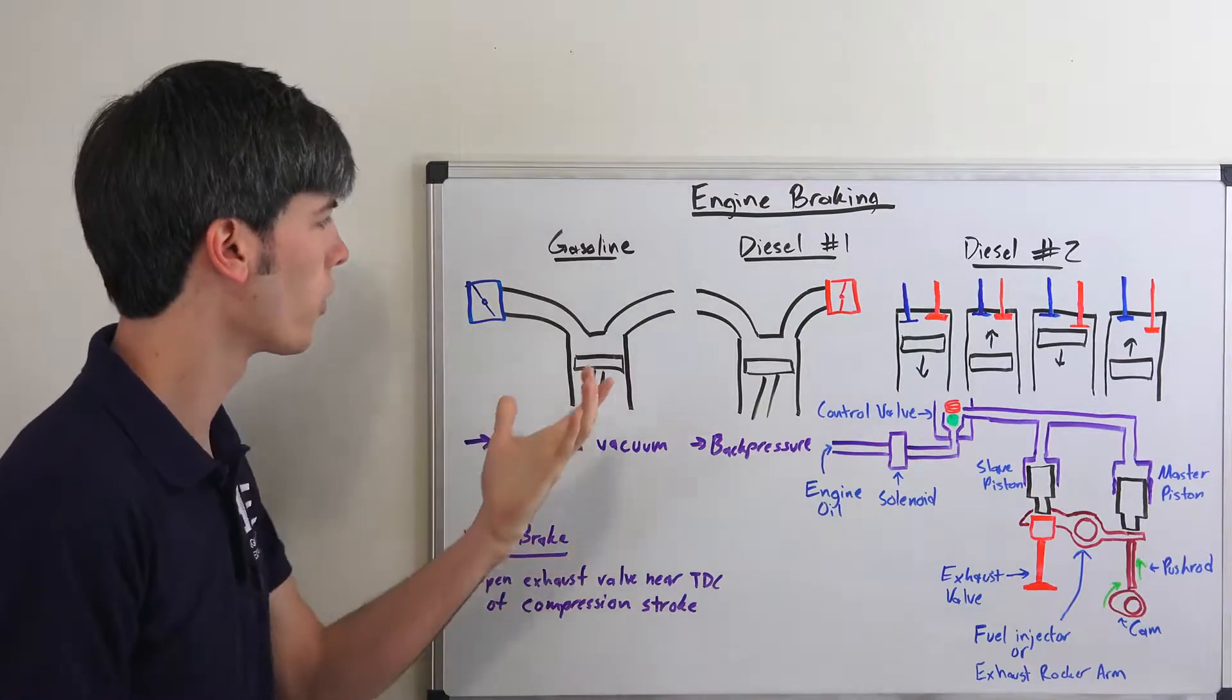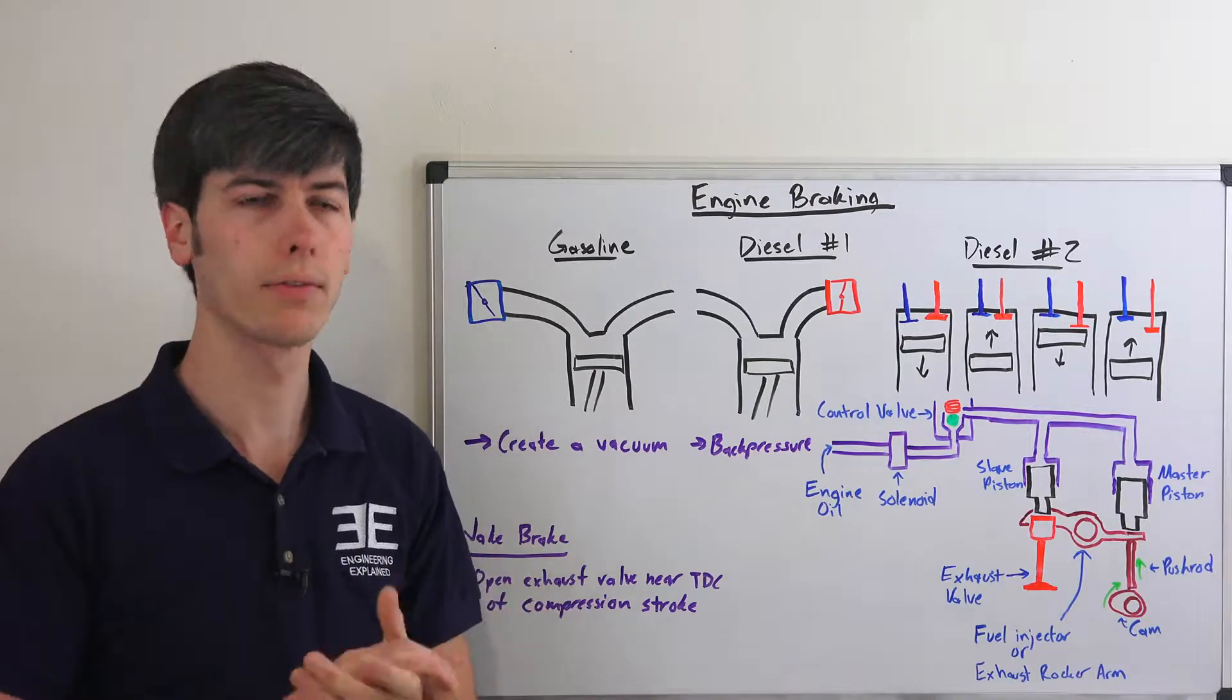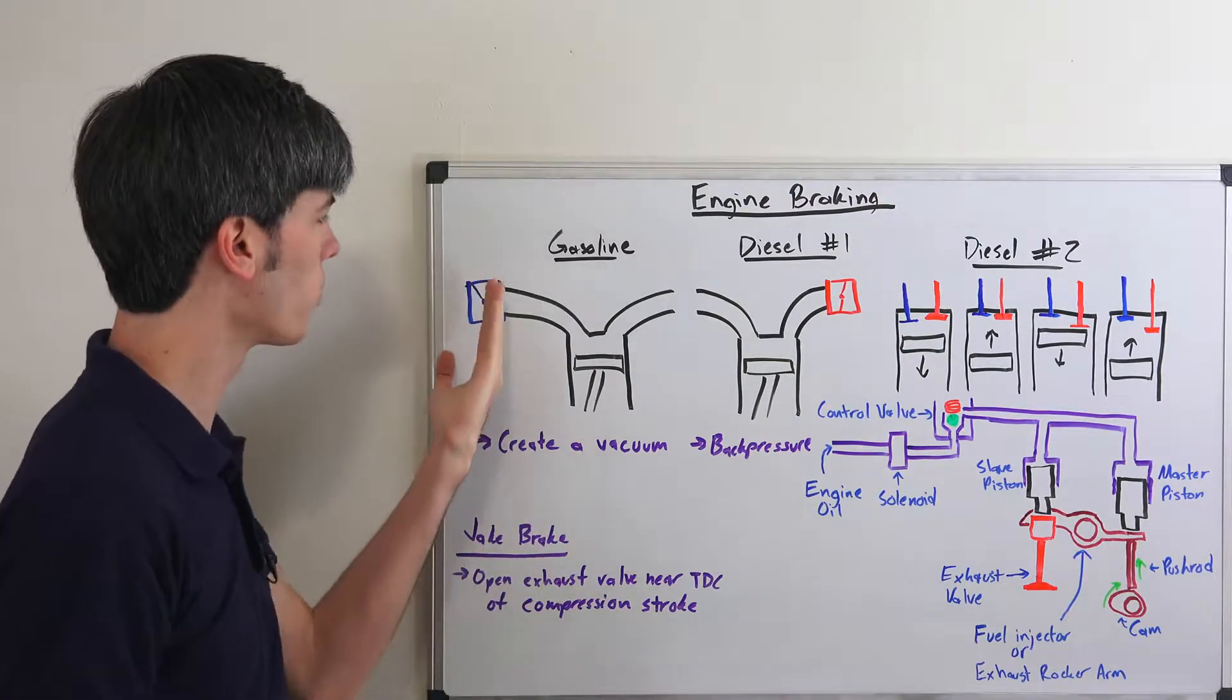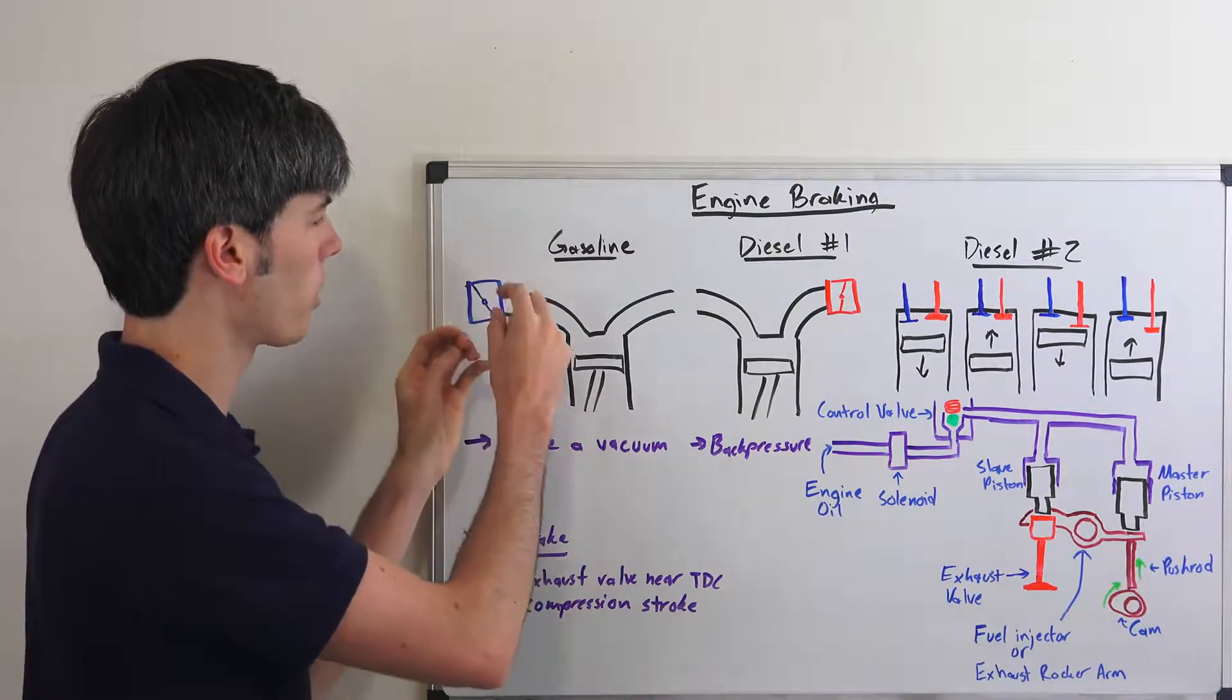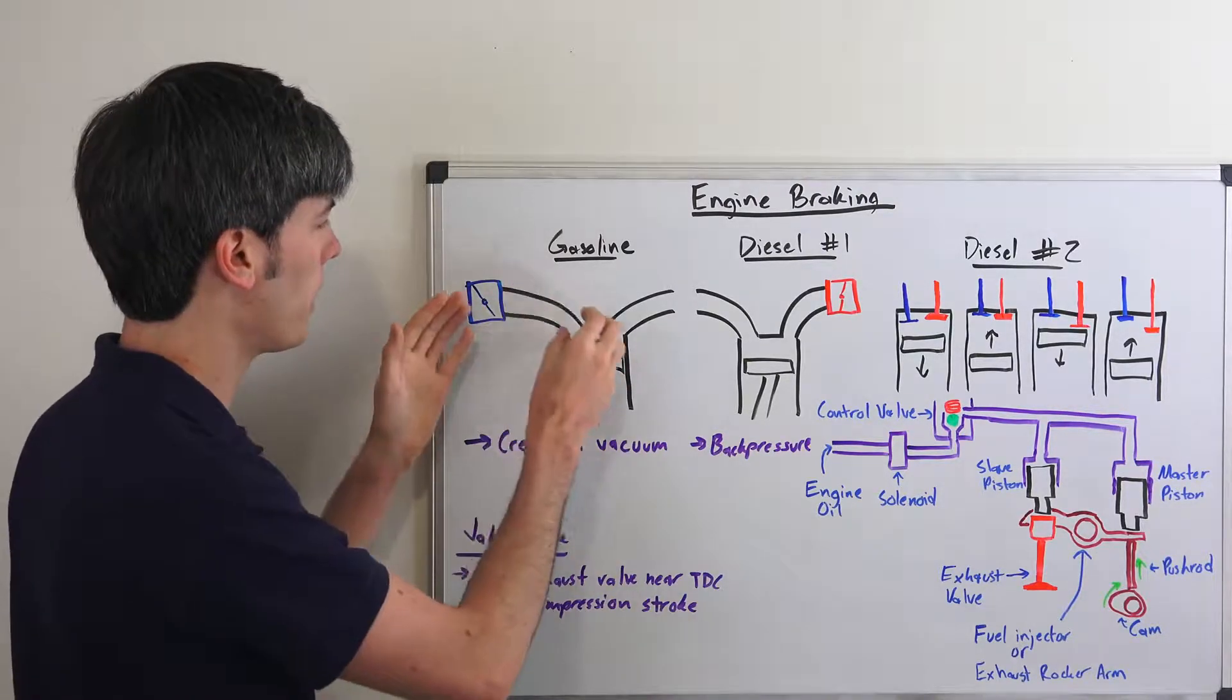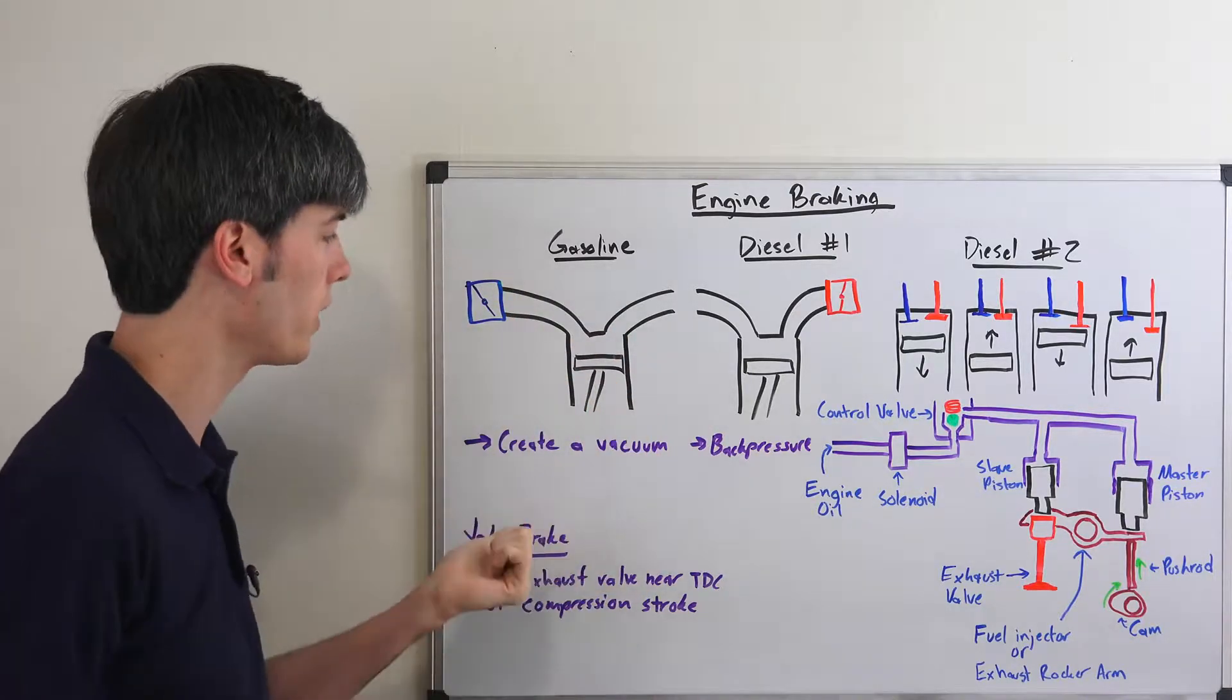So first, getting into the gasoline version. Basically with this, when you let your foot off the throttle and you're leaving it in gear, the throttle body is going to close. So now as your piston moves down for the intake stroke, it's going to be trying to pull air in, but this throttle body is preventing that, so it's pulling a vacuum. A little bit of air is going to pass through but not much, and so you're pulling a strong vacuum and that vacuum is what's going to slow down your vehicle.